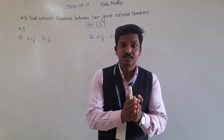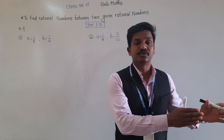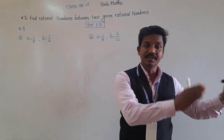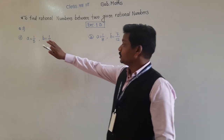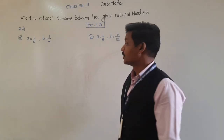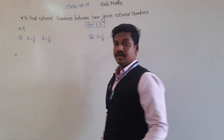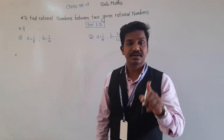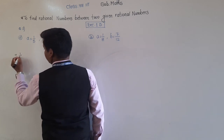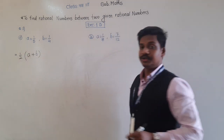We are going to look at two parts: when we have to find only one rational number, and when we have to find many rational numbers between two given rationals. To find only one rational number, we use the formula: one-half times (A + B).